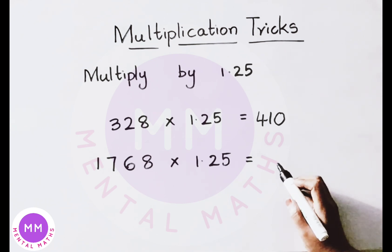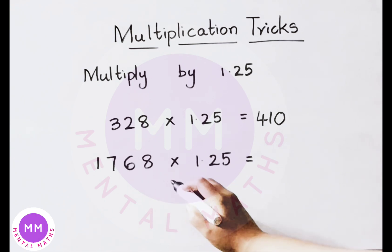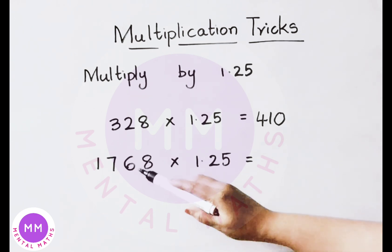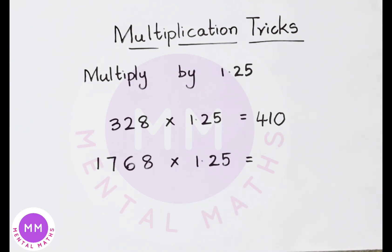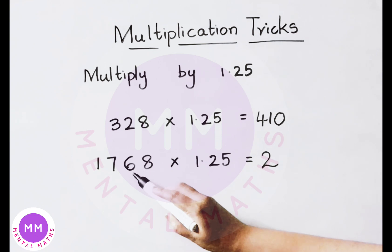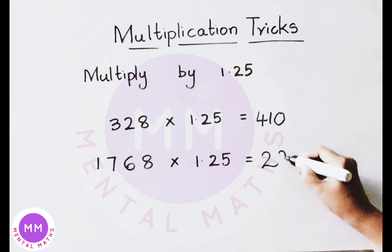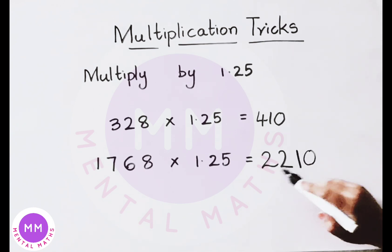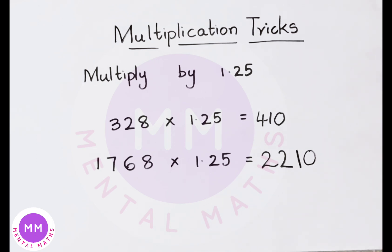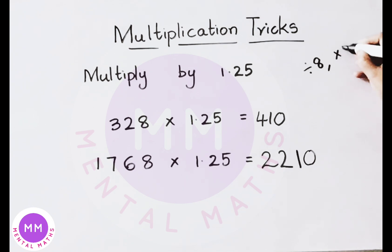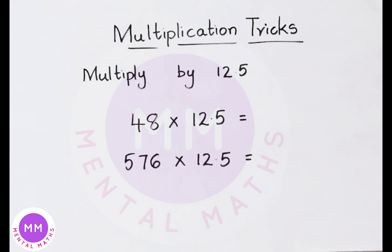See the next example: 1768 multiplied by 1.25. Divide the given number by 8, then multiply by 10. 8 into 16 gives a remainder of 1, so the number becomes 16. 8 into 16 is 2 times, and 8 into 8 is 1 time. Now multiply this value by 10, so the answer is 2210. Whenever you multiply any number by 1.25, divide the given number by 8 and then multiply that value by 10 to get the result.